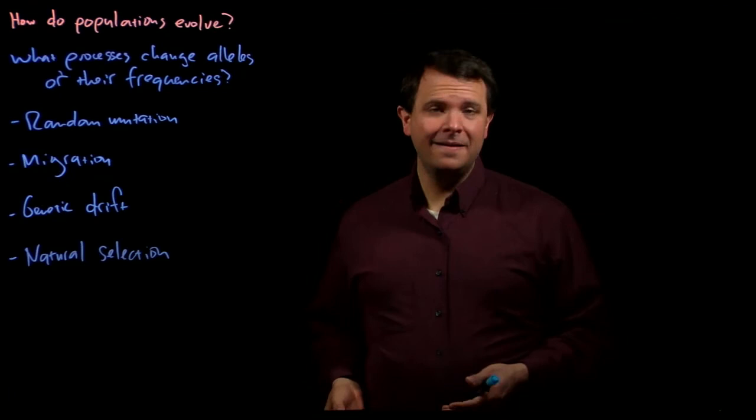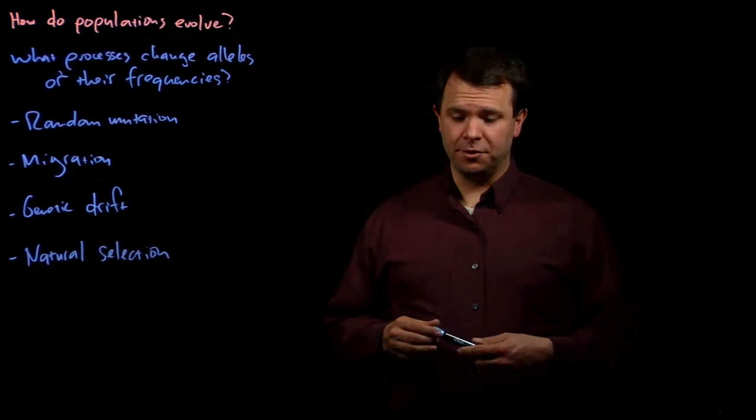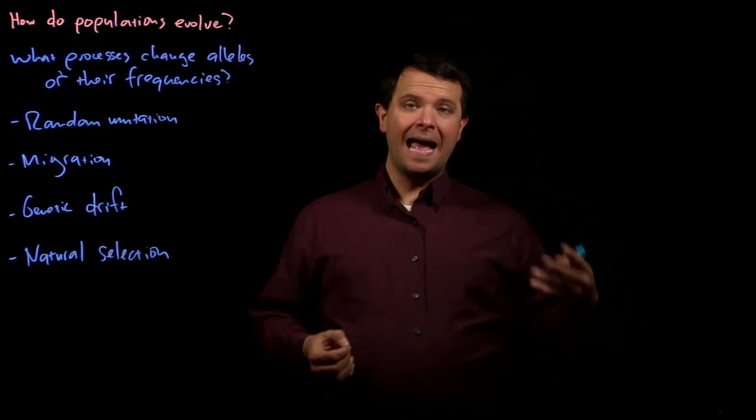This is the idea that different genotypes are more or less likely to survive and reproduce. And this breaks the central tenet of Hardy-Weinberg, which is that alleles in the current generation are passed to the next generation at the same frequency. We'll discuss each of these ideas in turn, taking a quantitative look at how these processes affect allele frequencies and their transmission. We'll start with mutation and migration.